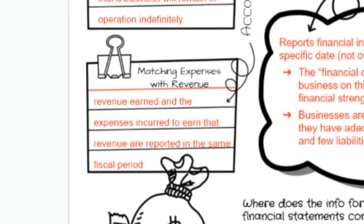The third accounting concept is matching expenses with revenue, meaning that revenue earned and the expenses incurred to earn that revenue are reported in the same fiscal period. For example, if you buy supplies in bulk, you only count the supplies you actually used in that time period. Our example was toilet paper — if you bought a huge amount but didn't use it all in the month, you only count what you used as the expense.